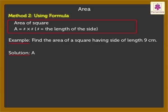Now let's solve one more example. Find the area of a square having side of length 9 centimeters. Area = 9 × 9 = 81 square centimeters.